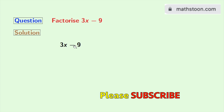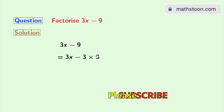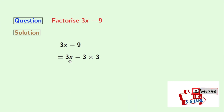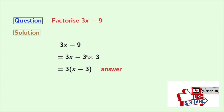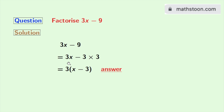This is our given expression. Now we will rewrite 9 as 3 times 3. So we have 3 common in both the terms, so we will take it out. Doing that, we get this equal to 3 times (x minus 3). And this is our desired factorization.